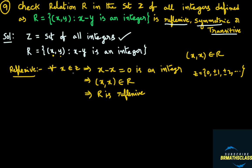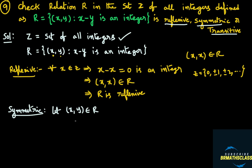If you take any x in Z, the ordered pair (x, x) also belongs to R, so the relation R is a reflexive relation. Now we need to check that R is symmetric. To check whether the relation is symmetric or not, we will take an ordered pair (x, y) in the relation. Let (x, y) belong to R. If we can prove that the ordered pair (y, x) also belongs to R, then we say that the relation is symmetric.